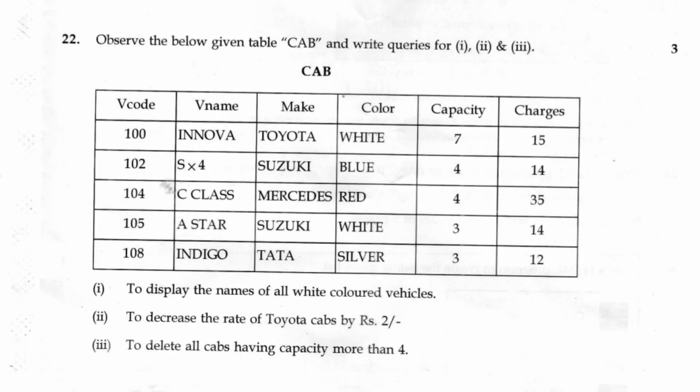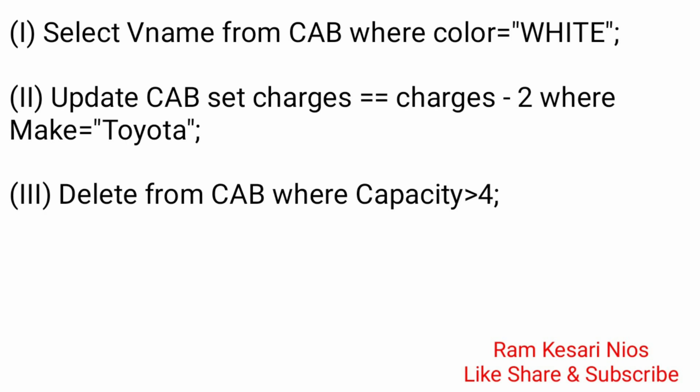Question 22: Observe the below given table CAB and write queries for parts 1, 2, and 3. 1. To display the names of all white colored vehicles: SELECT v_name FROM cab WHERE color = 'white'; 2. To decrease the rate of Toyota cabs by rupees 2: UPDATE cab SET charges = charges - 2 WHERE make = 'Toyota'; 3. To delete all cabs having capacity more than 4: DELETE FROM cab WHERE capacity > 4;